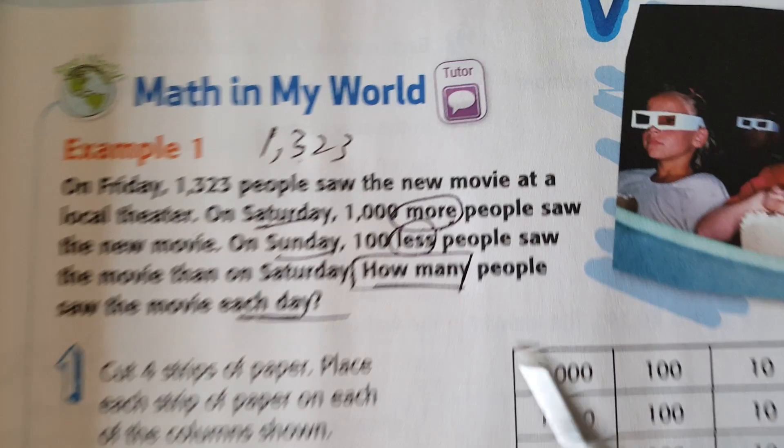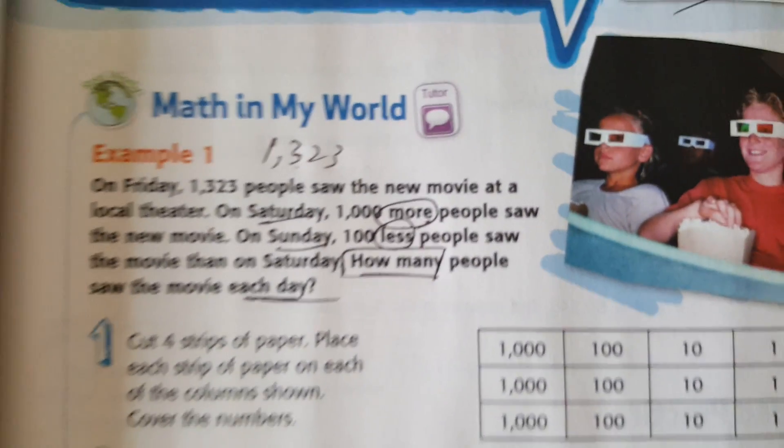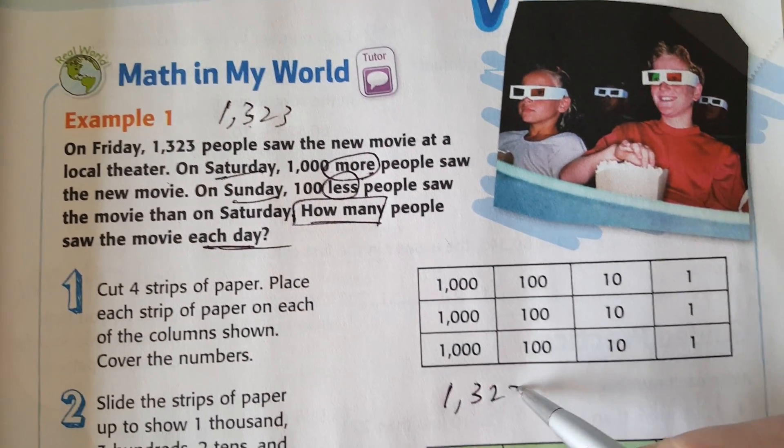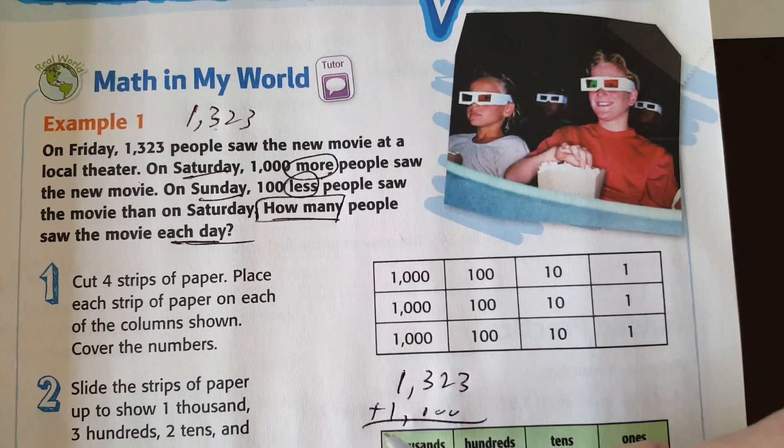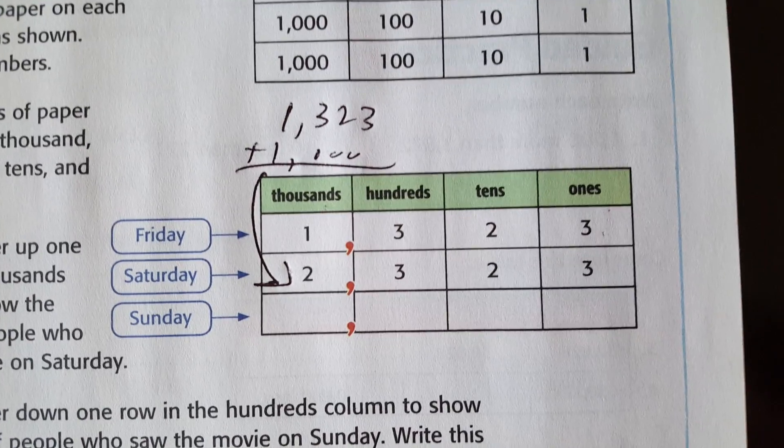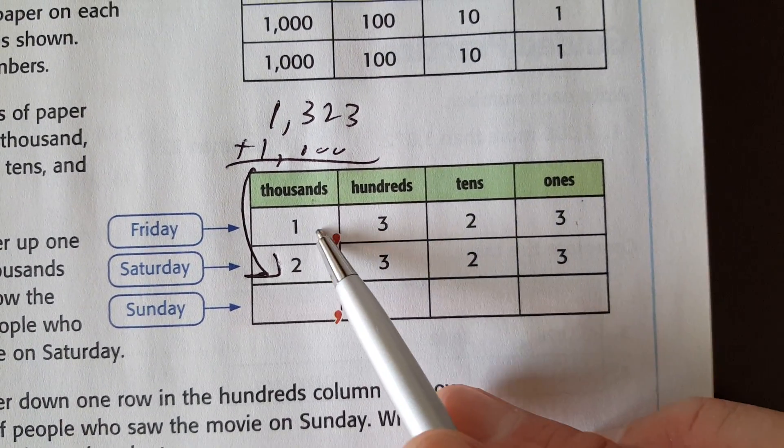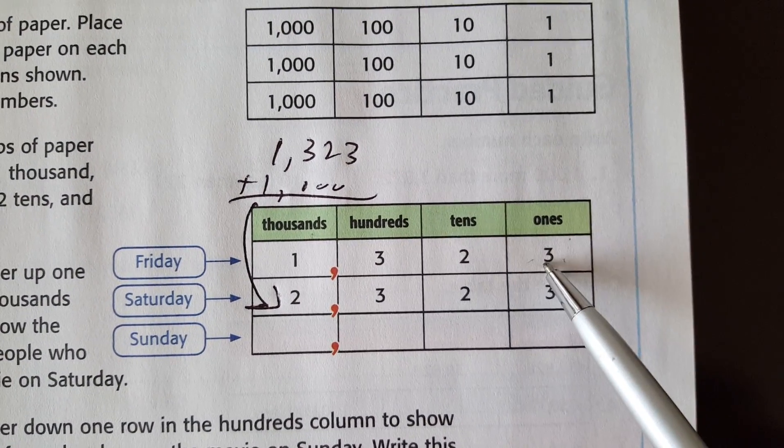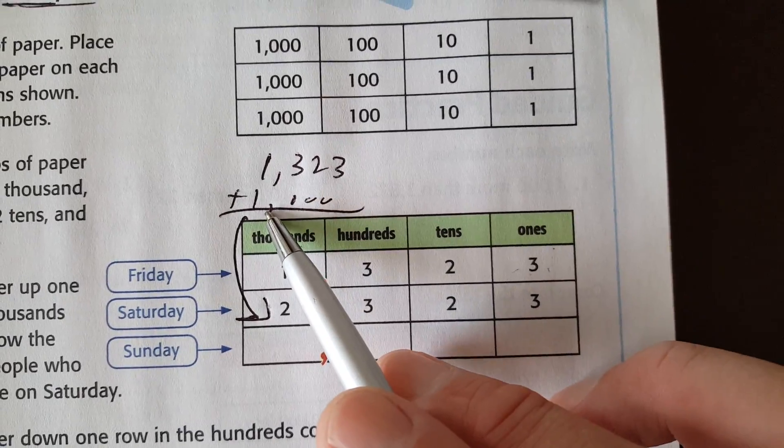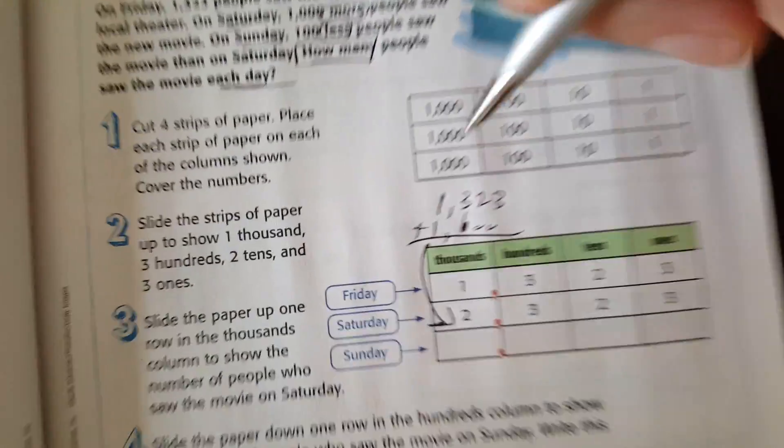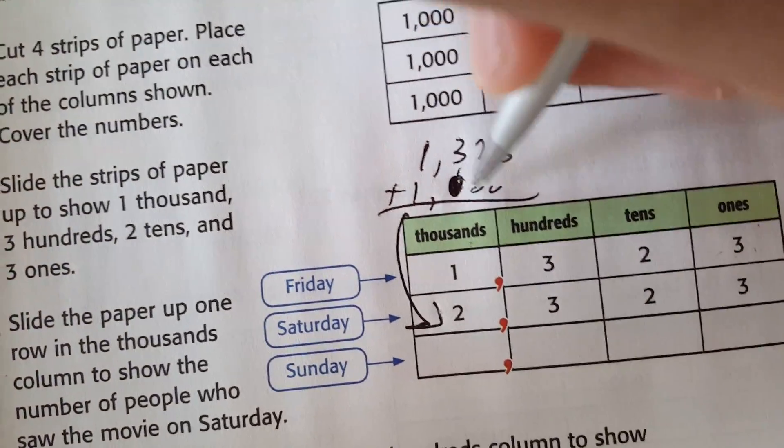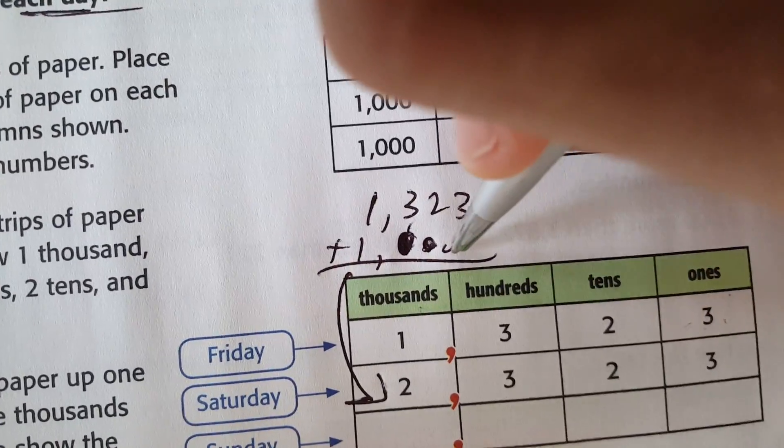If on Saturday, there was 1,000 more, it would be 1,323 plus 1,000, which gets you that number right there. None of the other digits changed because we're adding 1,000. And if that looks funny, it's a 0. That looks like a 6. It's a 0.